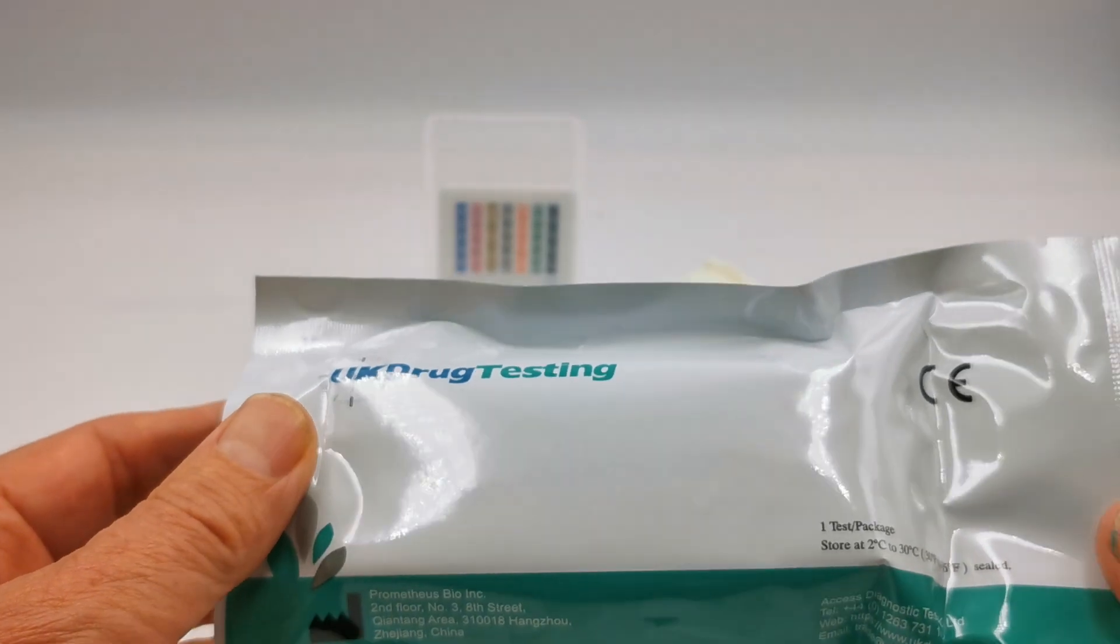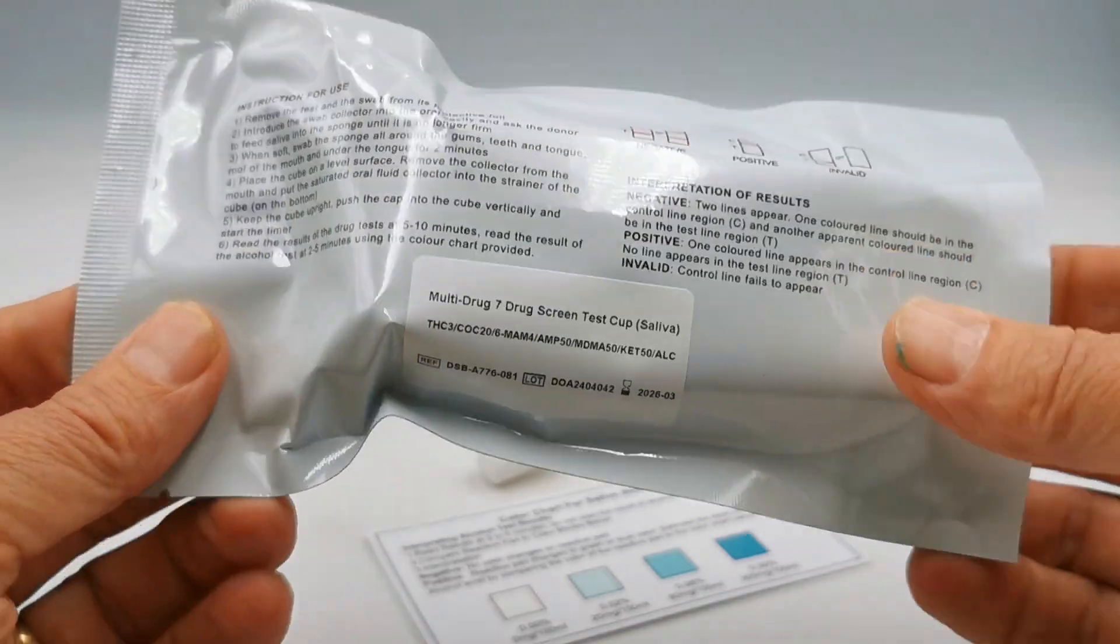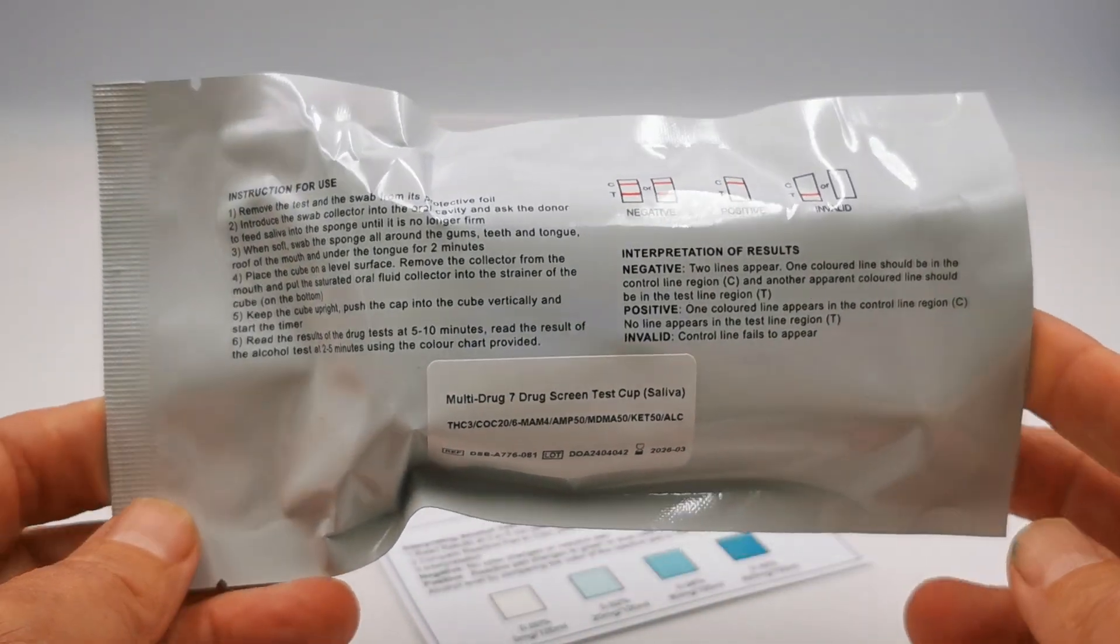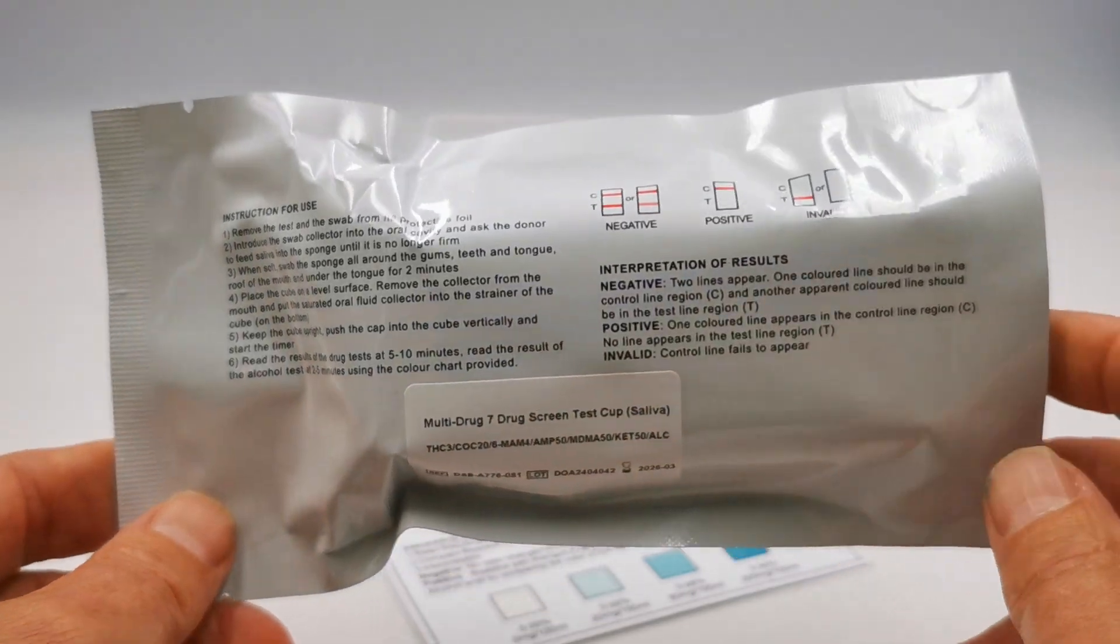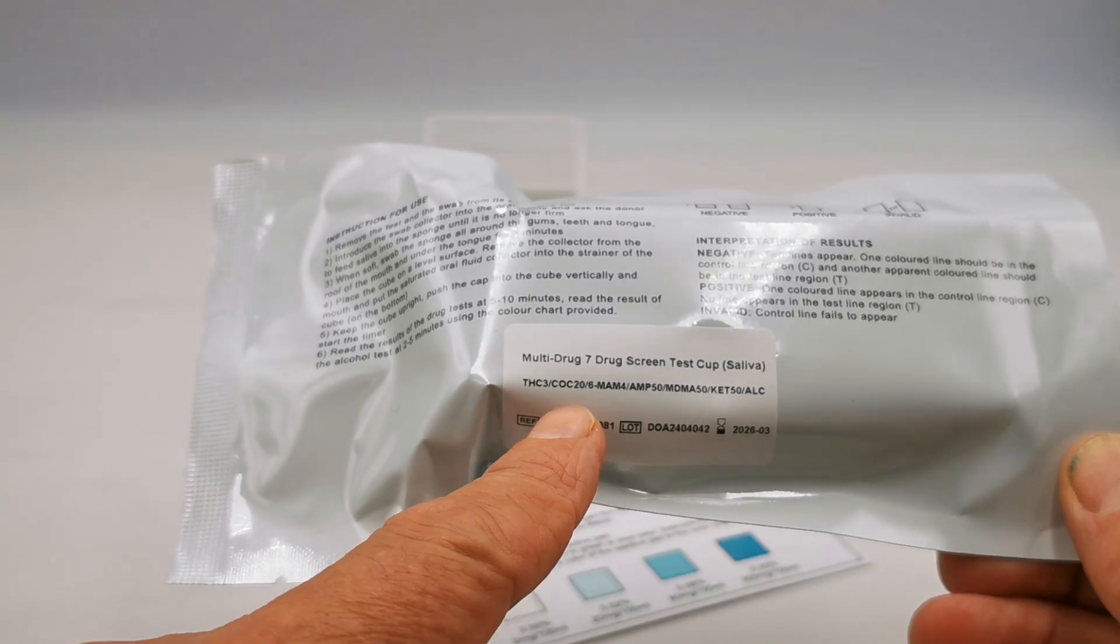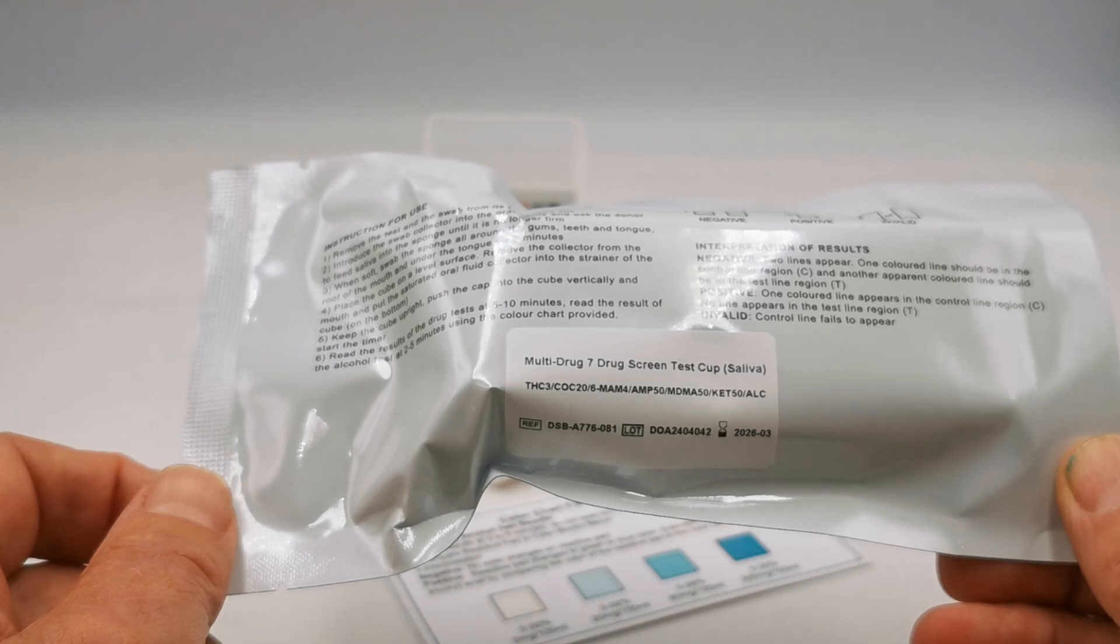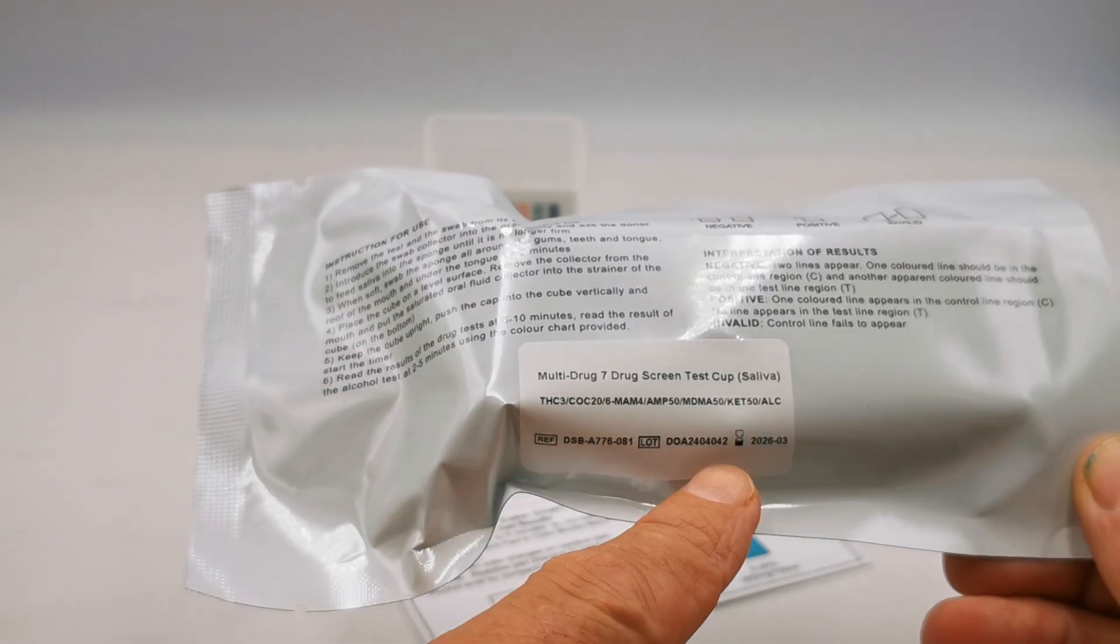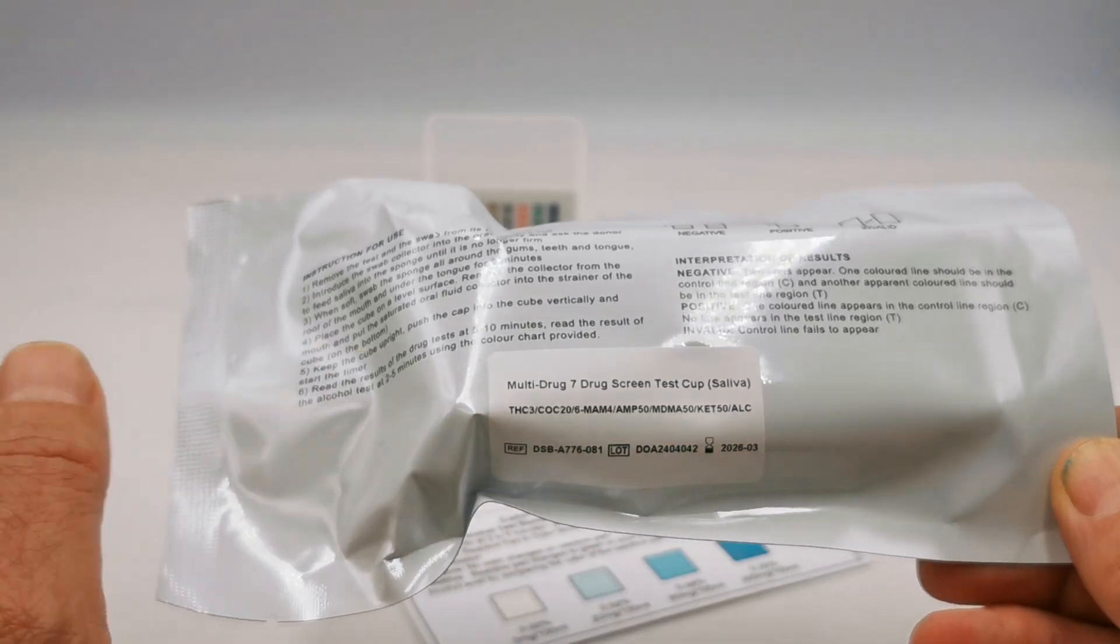UK Drug Testing CE mark foil in our standard colors, and on the rear we've really gone to town to make sure that you've got a full set of instructions both in terms of how to run the test and how to interpret the results. There's also a sticker here giving you the combination and cutoff sensitivities for each of the six drug groups plus alcohol with the code numbers, lot numbers and batch expiry date.